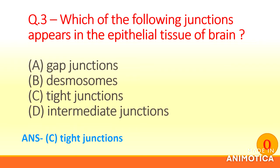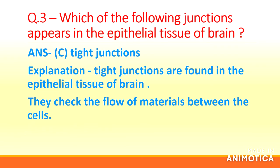Answer: (c) Tight junctions. Explanation: Tight junctions are found in the epithelial tissue of the brain. They check the flow of materials between the cells.